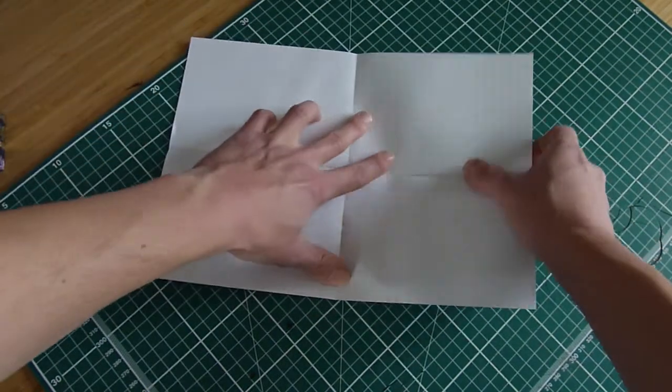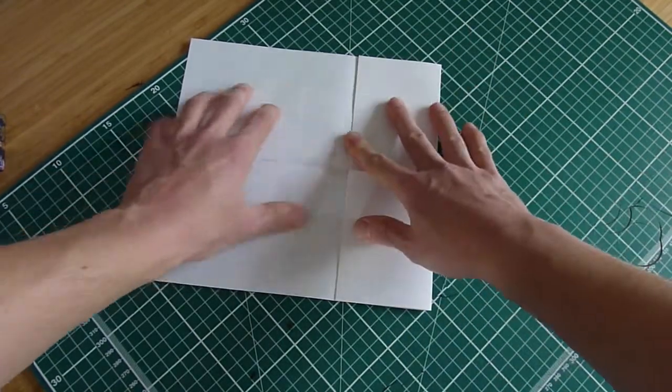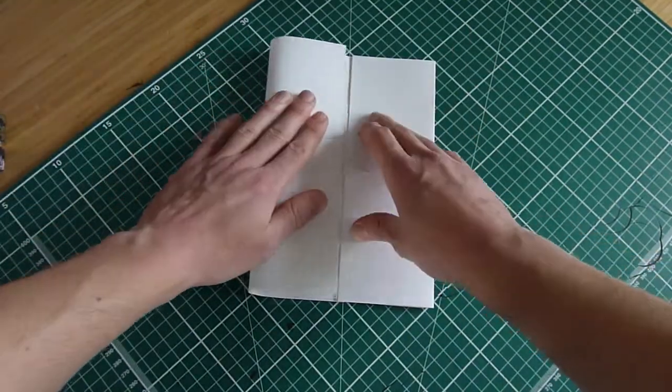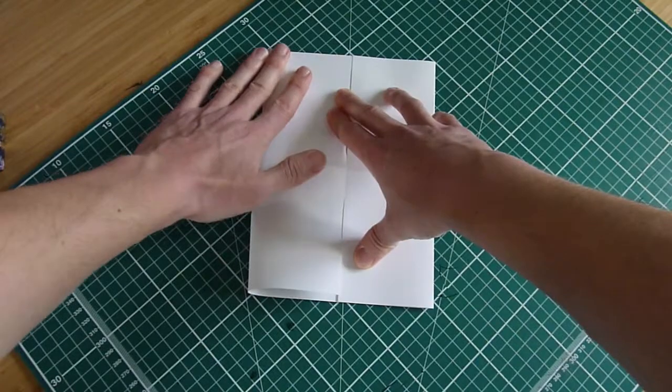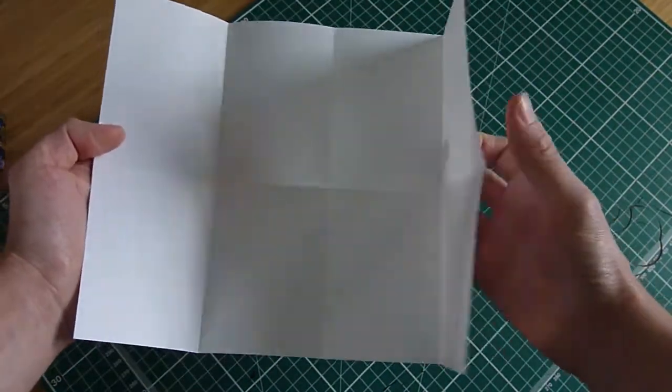Taking each outside edge, fold each half in half again to the center line. You can see now that when we do that, the outside edges are meeting in the middle and you can start to see what your eight-page zine will look like. You can start to see the basic shape of the panels.